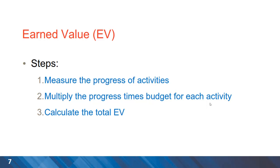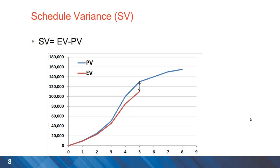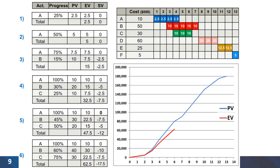For calculation of earned value, we can follow these major steps: measure the progress of activities — the actual progress made on site — then multiply this progress by the budget for each activity to calculate the earned value. The important performance metric of schedule variance is then the difference between earned value and planned value.